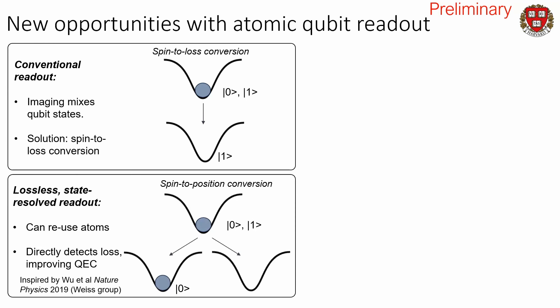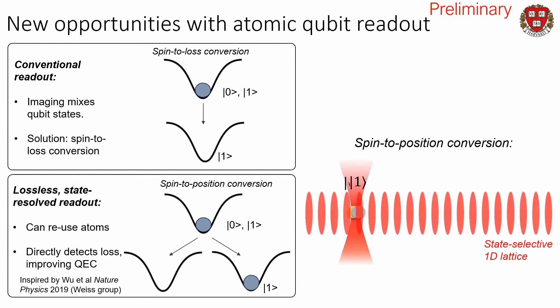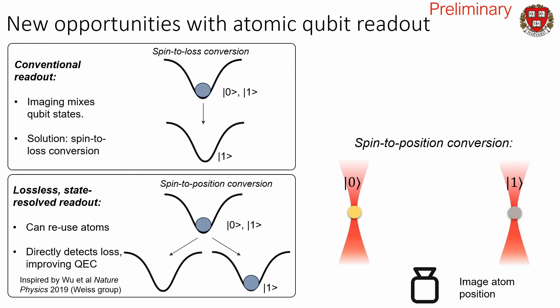We developed a way to do lossless state-resolved readout, where instead of doing spin-to-loss conversion, we do a spin-to-position conversion — heavily inspired by a beautiful paper from Dave Weiss's group. Qubit state zero, we put on the left; qubit state one, we put on the right. We use optical tweezers but added a 1D lattice into our system, and this 1D lattice interacts with only one of the two spin states due to atomic selection rules. We then take the tweezers, separate them — one of the two atoms is pinned by the lattice and stays in the original tweezer, while the other qubit state moves with it. We then take a picture of the positional state of the atoms.